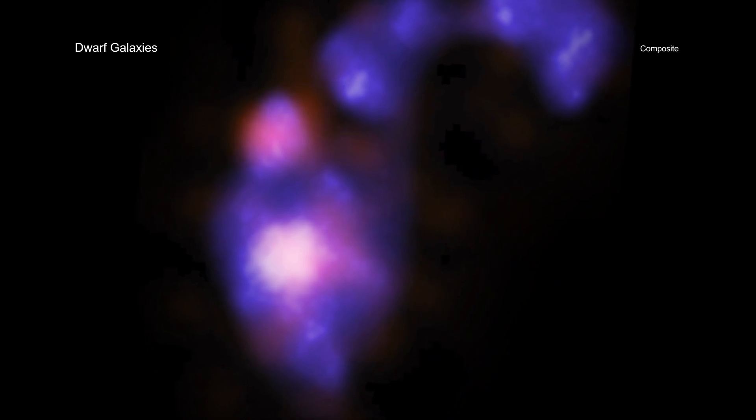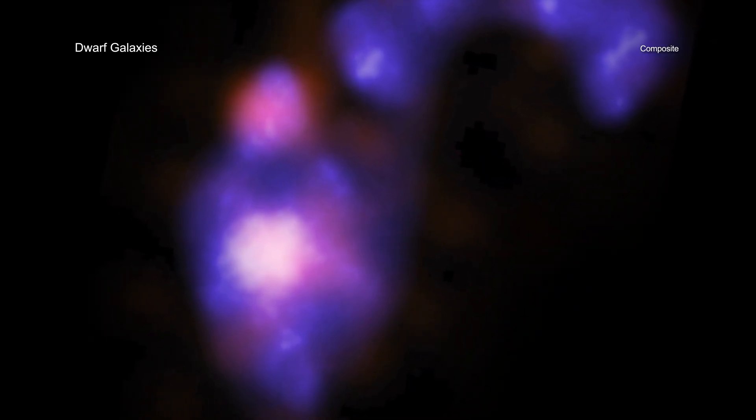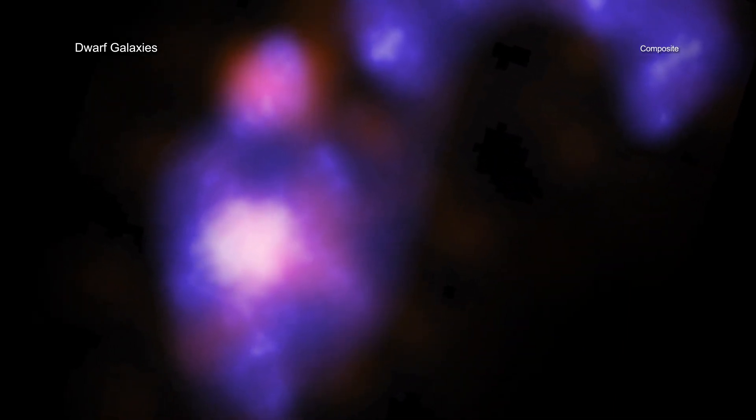The earliest dwarf galaxies are impossible to observe with current technology because they are extraordinarily faint at their large distances. Astronomers have been able to observe two in the process of merging at much closer distances to Earth, but without signs of black holes in both galaxies.